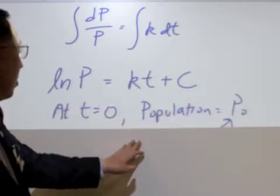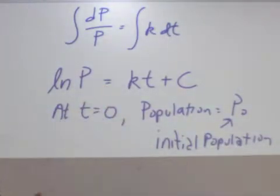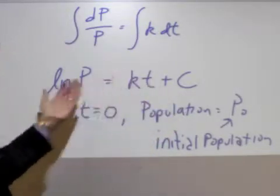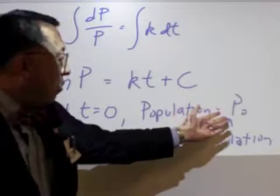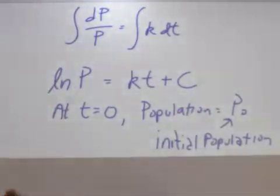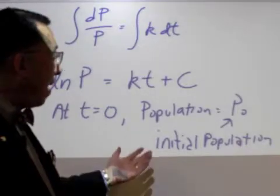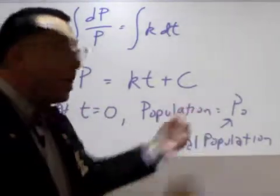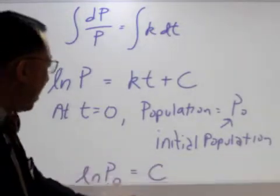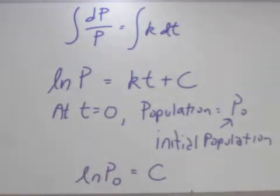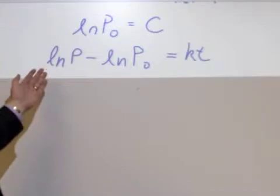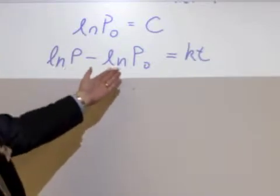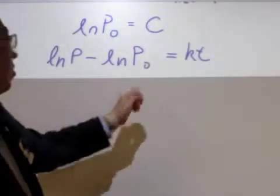We get the natural log of p is equal to kt plus c. At this point, we're going to set t equals zero. When we set t equals zero, the kt term goes away and we get the constant is equal to the natural log of p sub zero. We're going to let p sub zero — or p naught — represent the initial population. So the population at time t equals zero is the initial population, and the constant is simply the natural log of the initial population. Substituting back into the original equation, we get the natural log of p minus the natural log of p naught is equal to kt.